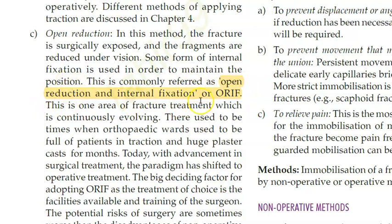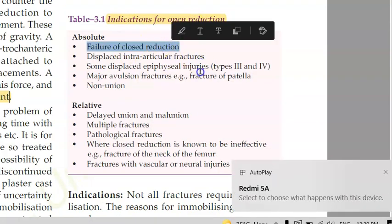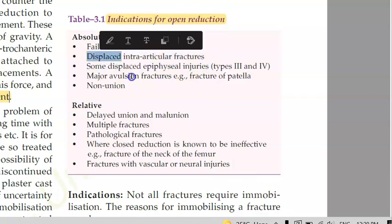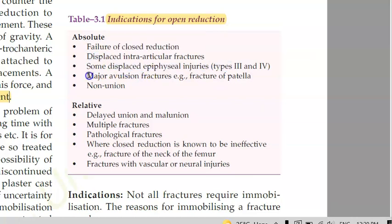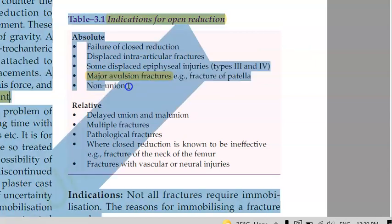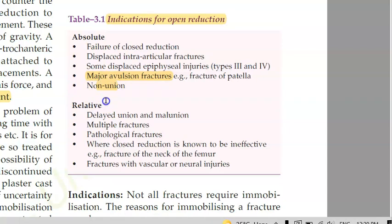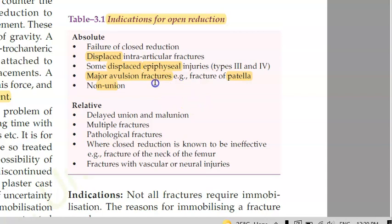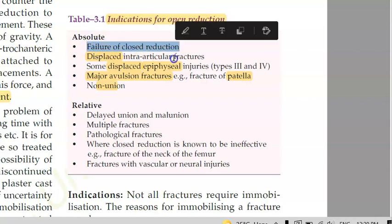In open reduction, you surgically cut the skin, go in, and reduce the fracture. You can also perform internal fixation with plates and screws. Indications for open reduction include: failed closed reduction, displaced intra-articular fractures, displaced epiphyseal injuries, major avulsion fractures such as of the patella, and non-union where the fracture has not united.